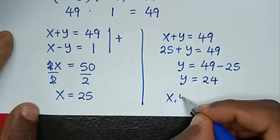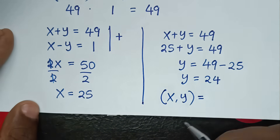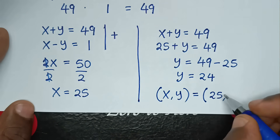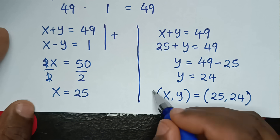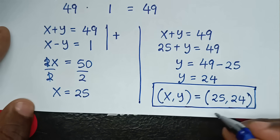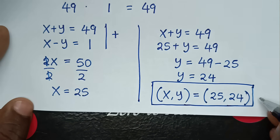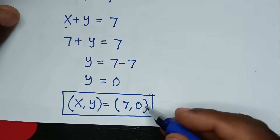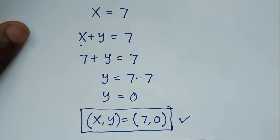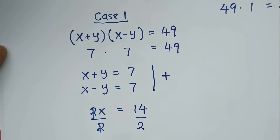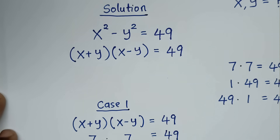Therefore (x, y) = (25, 24). Since both values are greater than or equal to 0, we have two valid solutions: (x, y) = (25, 24) and (x, y) = (7, 0). Thank you, don't forget to subscribe to the channel, and see you in the next video. Bye bye.